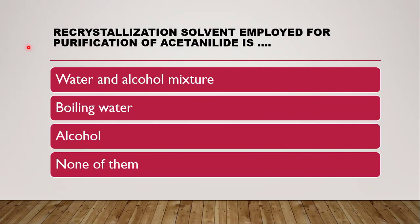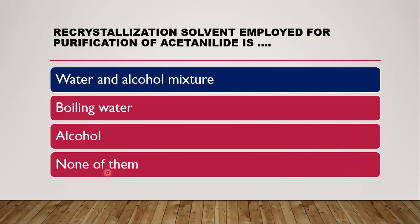Next question: the recrystallization solvent employed for purification of acetanilide is — whether it is a water and alcohol mixture, boiling water, only alcohol, or none of them. The correct answer is water and alcohol. For the synthesis of acetanilide, we use 120 mL of water and 2 mL of rectified spirit as the recrystallization solvent mixture.